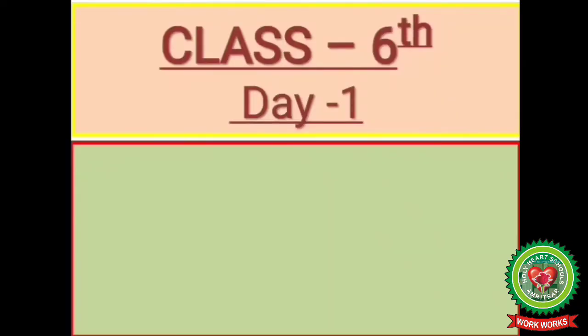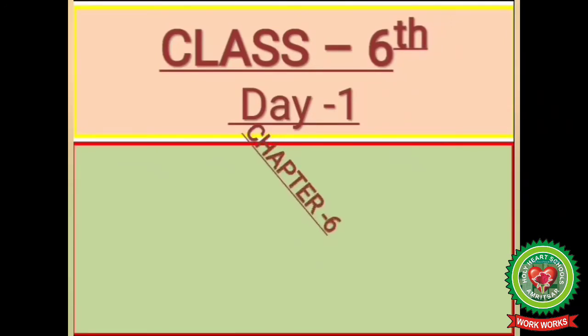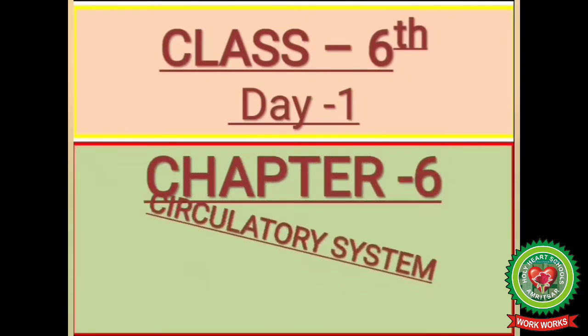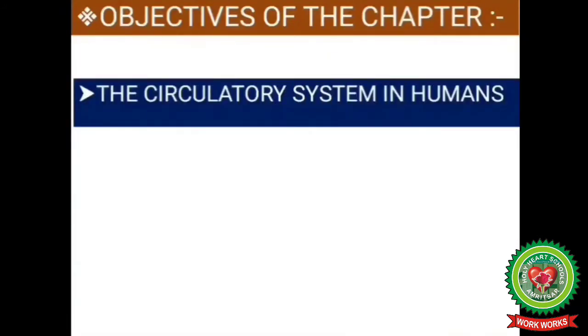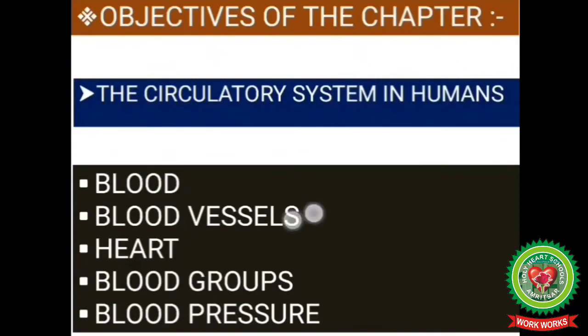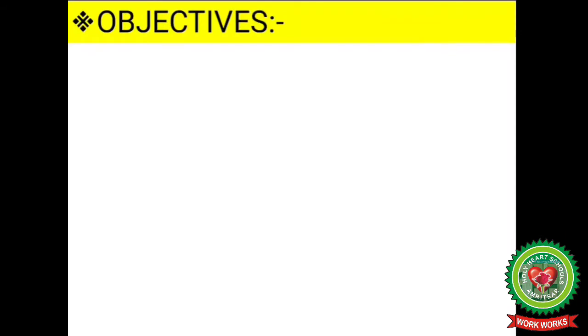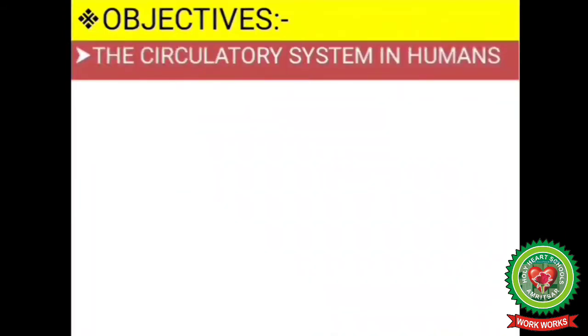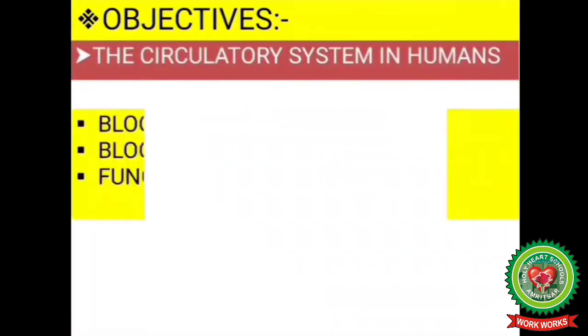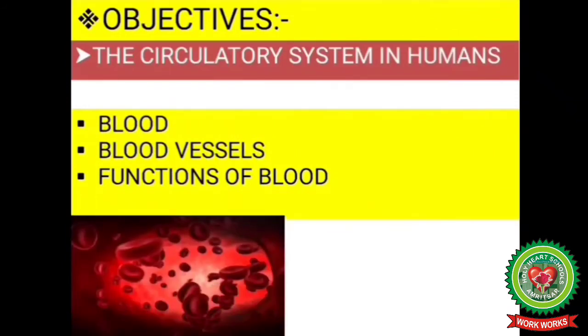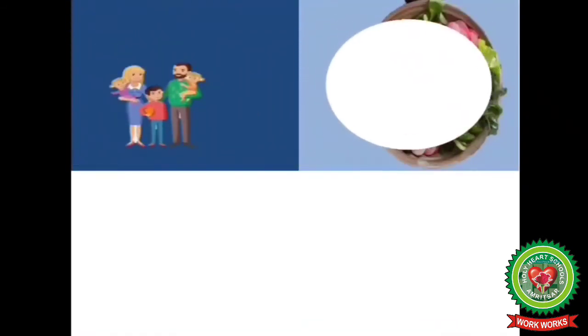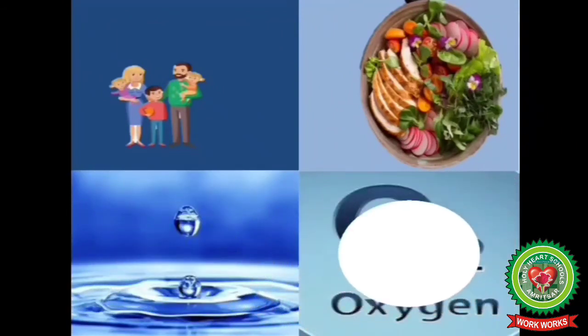Hello children, this is Day 1, Chapter 6: Circulatory System. The objectives of the chapter include the circulatory system in humans, blood, blood vessels, heart, blood groups, and blood pressure. Students, we know that all living organisms need food, water, and oxygen for their survival.